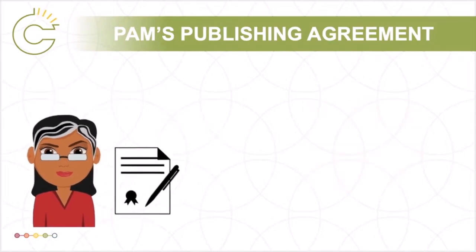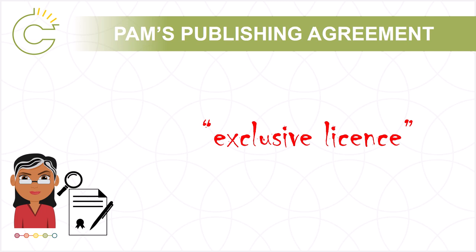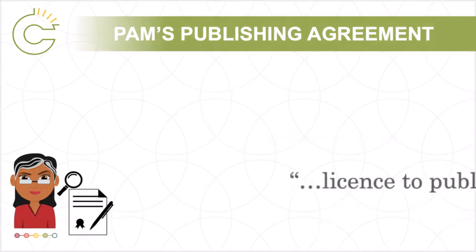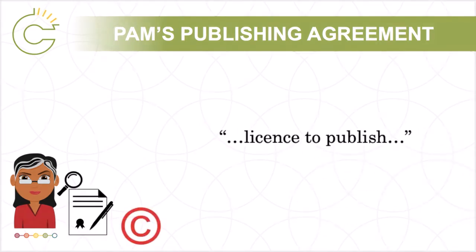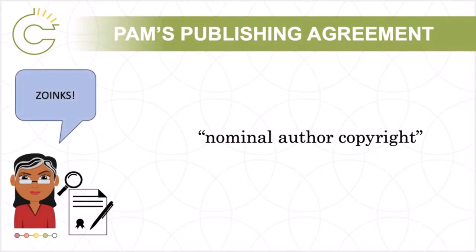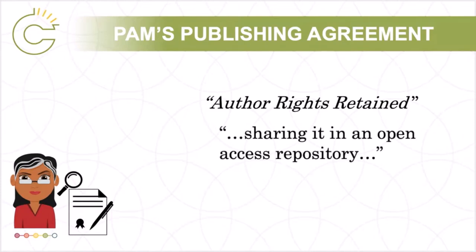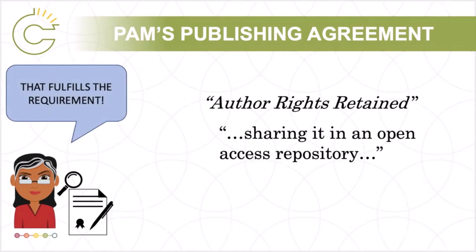Pam is now ready to compare her professional needs for reusing the article against the terms of the publishing agreement. She does not see the phrase 'copyright transfer' anywhere in the agreement, but does notice that the publisher requires an exclusive license to do all the things that the Copyright Act gives her a right to do. Even though the contract is structured as a license to publish, it is essentially a transfer of all the rights associated with copyright, creating what is called a nominal author copyright situation. However, she carefully reads the section entitled 'Author Rights Retained,' which makes it clear that she will retain the right to use the post-print version of the article in a number of different ways, including sharing it with a Creative Commons license in an open access repository six months after the final version of the article has been published. This will satisfy her funding agency's open access requirement without Pam having to pay the $3,000 fee for immediate open access via the publisher's website.